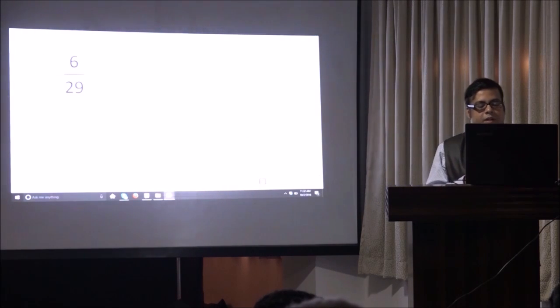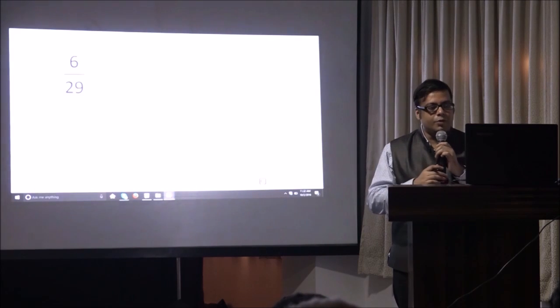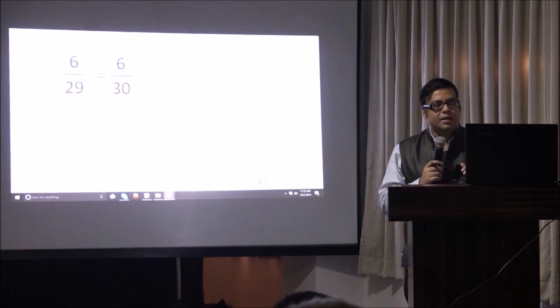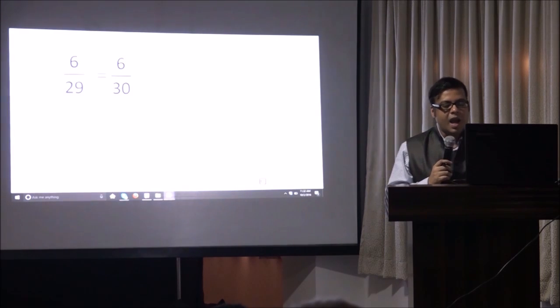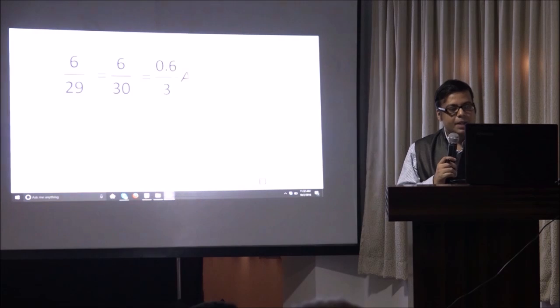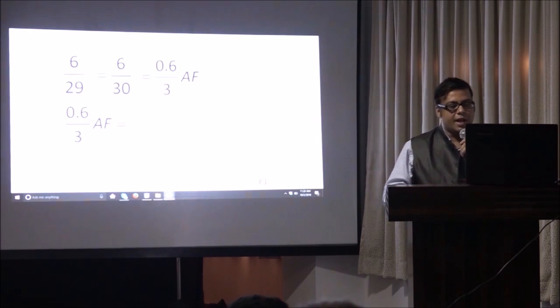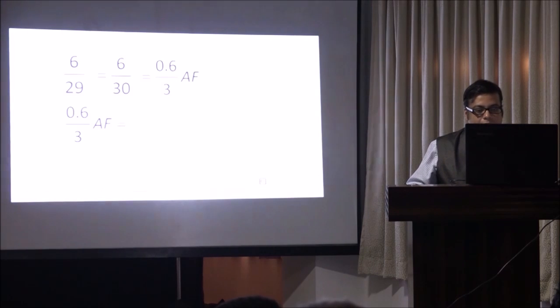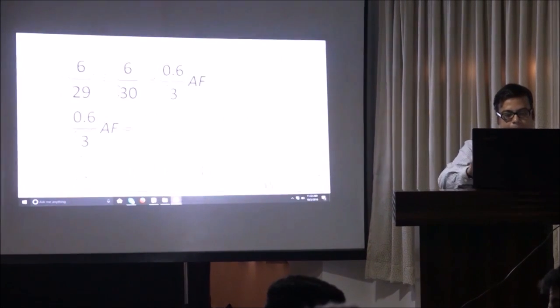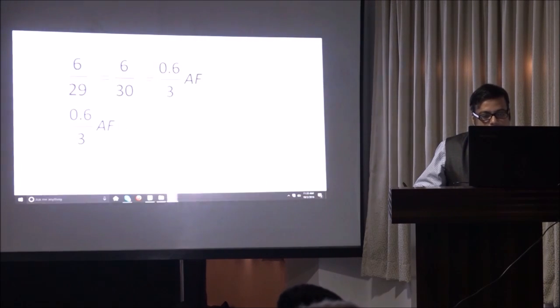Let's take another fraction. 6 divided by 29. So let's apply the same rule. 29 is nearest to 30. So I make it 6 by 30. And then I divide the numerator and denominator by 10. So that becomes 0.6 by 3 AF, auxiliary fraction. And now I start my calculation.